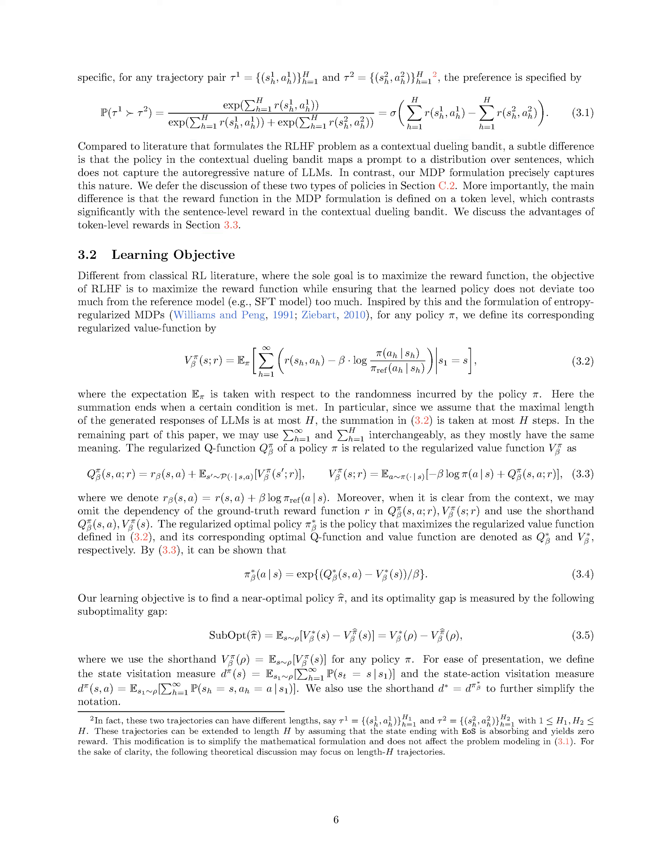In summary, we introduce an MDP formulation for RLHF, characterizing it using token-wise MDPs within LLMs. Our MDP model includes state space, action space, transition kernel, reward function, initial state distribution, and maximum interaction steps, capturing the autoregressive nature of LLMs through token-wise policies and rewards. Unlike contextual dueling bandits, our MDP approach offers advantages with token-level rewards and a learning objective that balances maximizing rewards while staying close to a reference model.